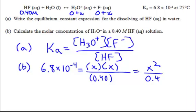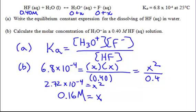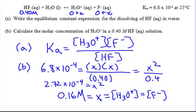That gives us X squared on top and 0.4 on the bottom. We multiply by 0.4 and get 2.72 times 10 to the negative 4, which equals X squared. We square root to find X, and X ends up being 0.016 molar. X is the H3O+ concentration and also the F- concentration. So both are 0.016 molar, and the 0.40 molar didn't drop much because Ka was so small.